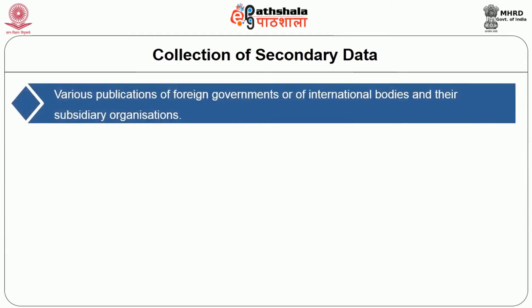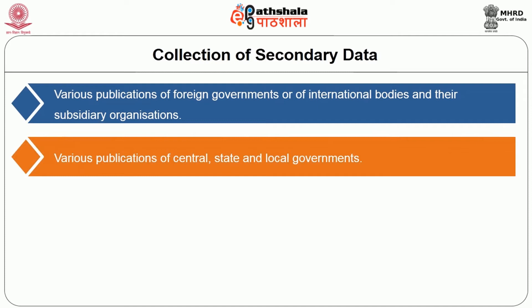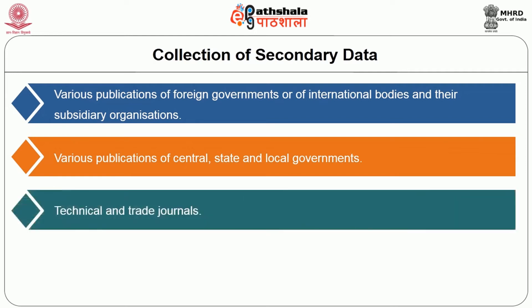Now let us see the collection of secondary data. Secondary data may either be published or unpublished data. Usually published data are available in: various publications of foreign government or of international bodies and their subsidiary organizations; various publications of central, state and local government; and technical and trade journals.